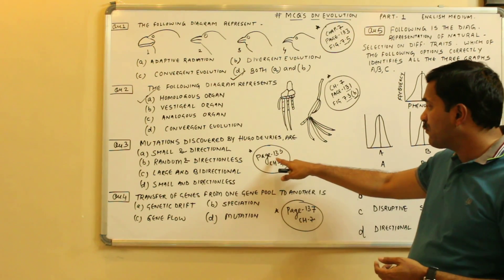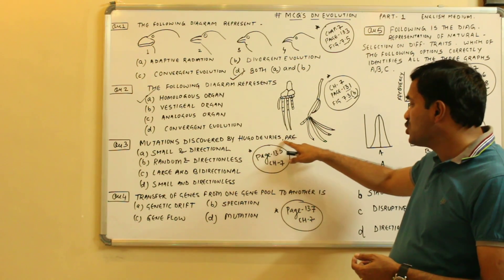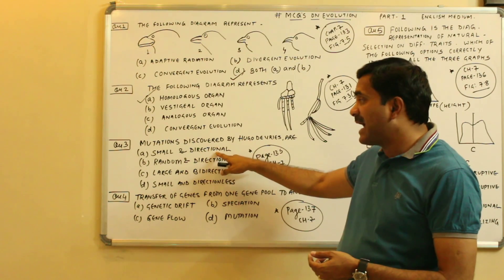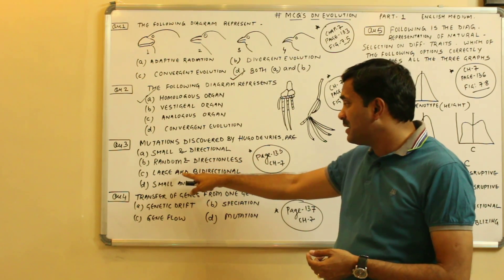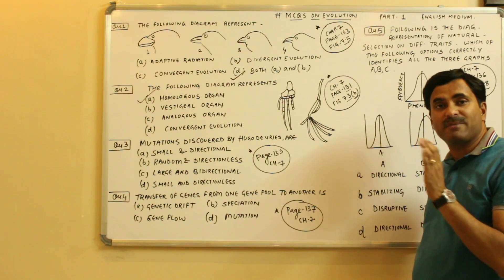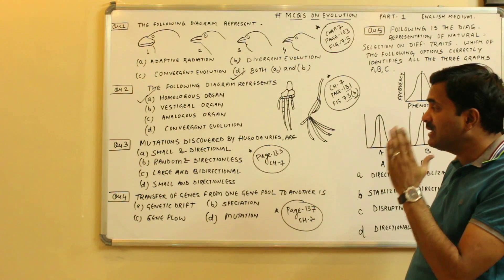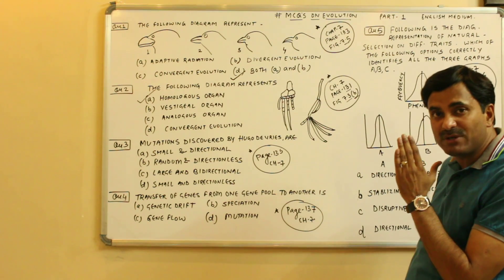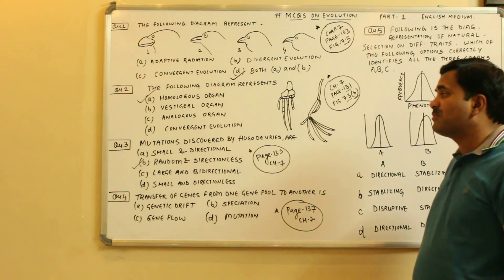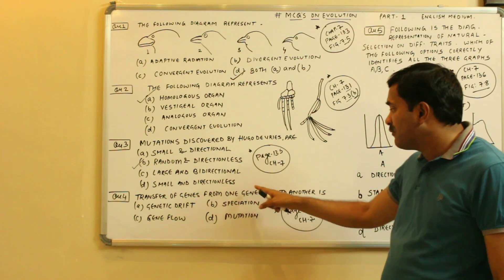Question number three is from chapter 7, page number 135: mutations discovered by Hugo de Vries are — small and directional, random and directional, large and bidirectional, or small and directionless? According to Hugo de Vries, mutations are random and directionless.